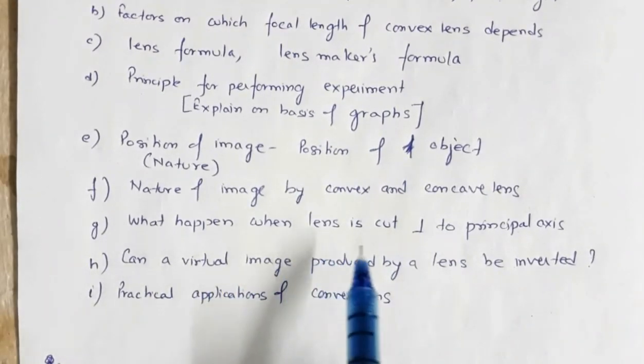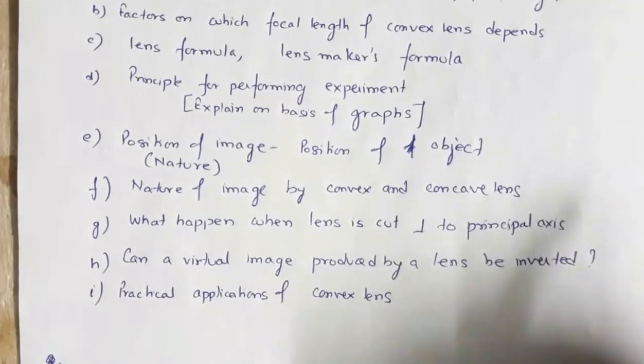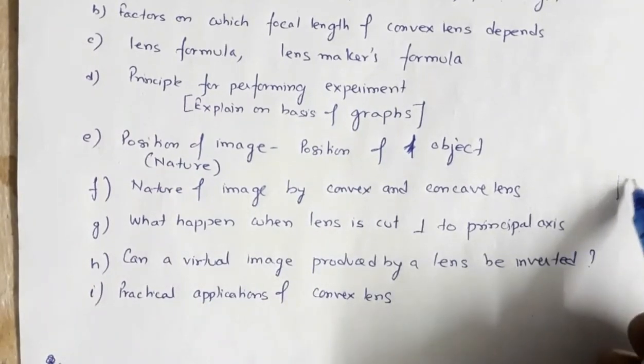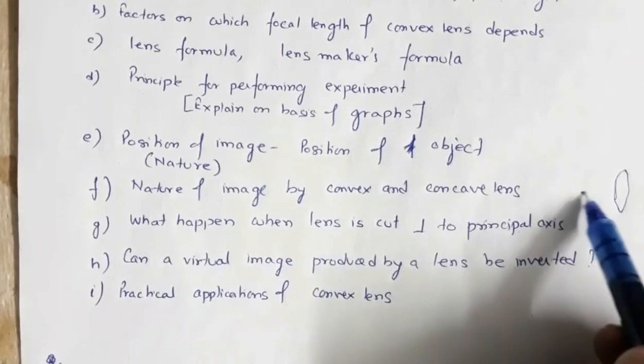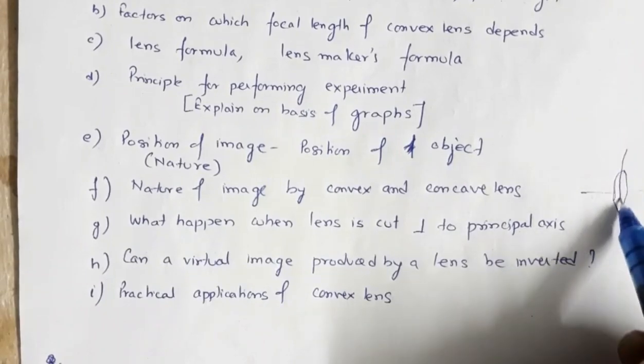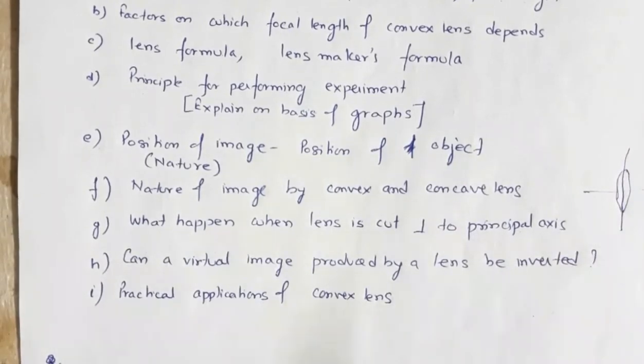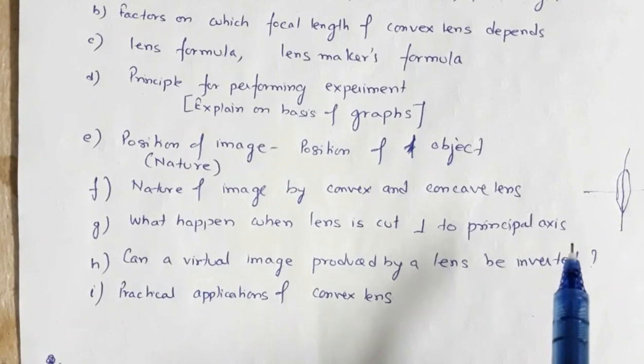What happens when a lens is cut perpendicular to the principal axis? Perpendicular to the principal axis means if this is the lens and this is the principal axis, if the lens is cut like this. There is a change in the focal length. So, you have to say in that terms.